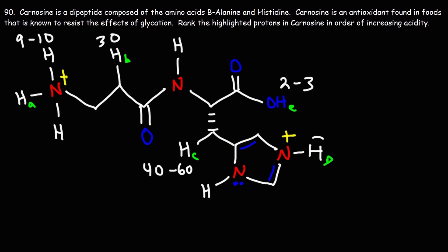What about the hydrogen atom on the imidazole ring? Histidine has three pKa values: the carboxylic acid is around two, the amino group is around nine to ten, and the imidazole of a histidine ring is around six. So this proton is going to be somewhere between six and seven.